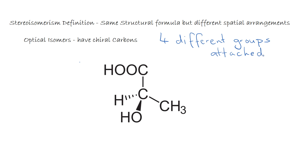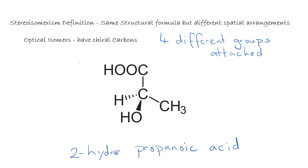Let's have a look at our example. The molecule here is 2-hydroxypropanoic acid. The central carbon here has got a methyl group, a hydroxy group, a hydrogen and a carboxylic acid group, and so we describe this as a chiral carbon. We denote the chiral carbon with a star, like so.